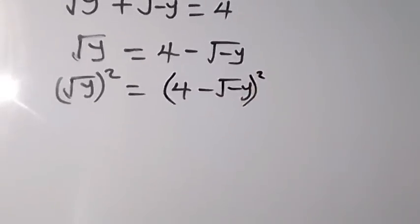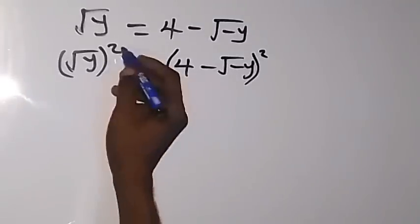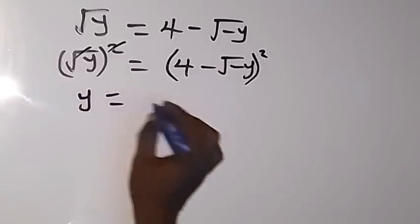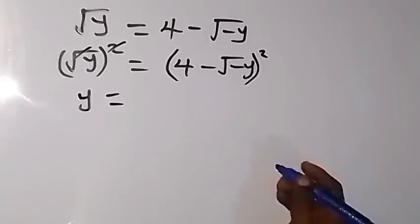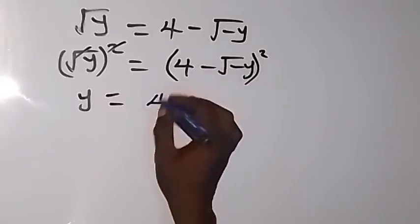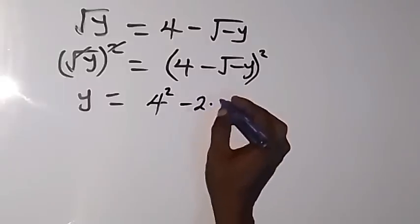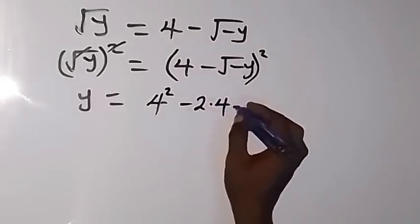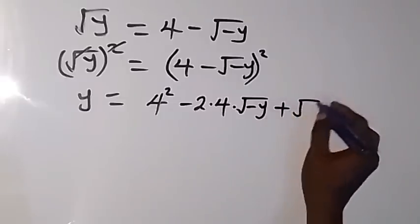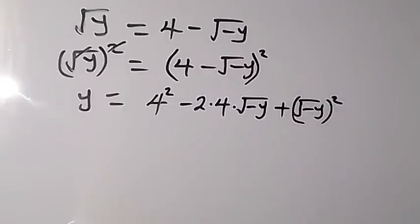From there, when we square root y, the square and square root cancel, so we have y equals to — and this is an identity expansion. When we square that bracket, we have four squared minus two times four times root minus y, then plus root minus y squared.